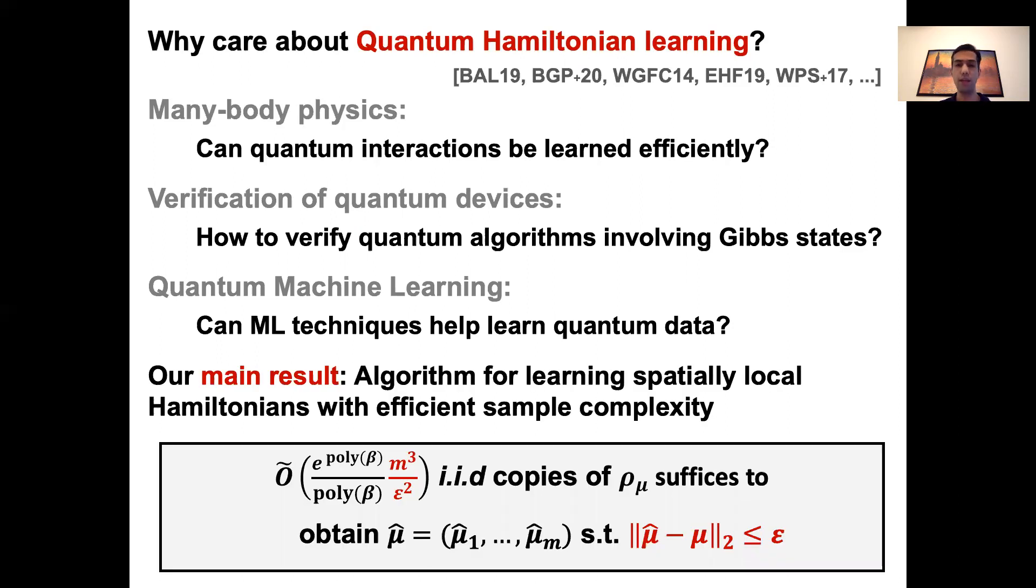Okay, so our main result answers this by providing a sample-efficient algorithm for this problem. And more specifically, we show that to learn the interaction parameters μ_1 through μ_m, up to an error epsilon in the L2 distance, it suffices to have order m cubed over epsilon squared copies of the Gibbs state. There is also a prefactor depending on beta, the inverse temperature, which becomes larger at very low or high temperatures, as intuitively expected.